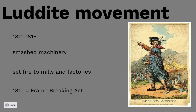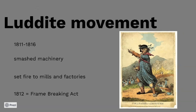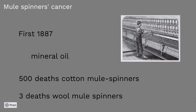The government responded by setting up the Frame Breaking Act in 1812. It was a temporary act where destruction of machinery was punishable by death. It was removed in 1814. And one of the notable health consequences linked to this machine was the discovery of mule spinners' cancer — a cancer of the scrotum. The first case was reported in 1887, and it caused 500 deaths among cotton mule spinners and three among wool mule spinners between 1911 and 1938. Research by the British Home Office Committee suggests that the mineral oil used to lubricate the mule was the cause.